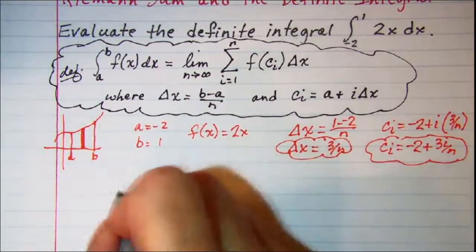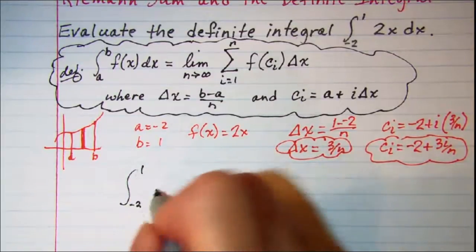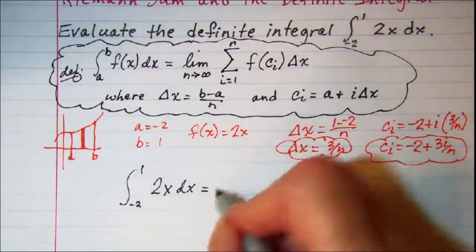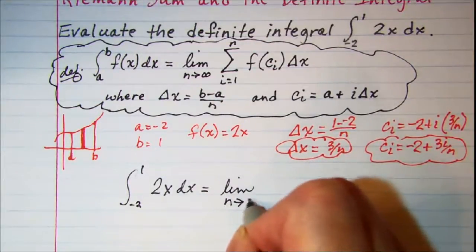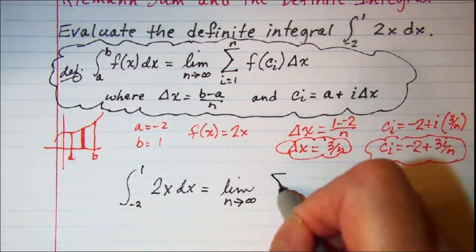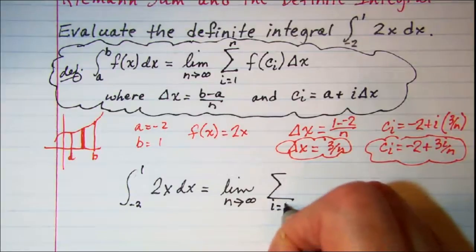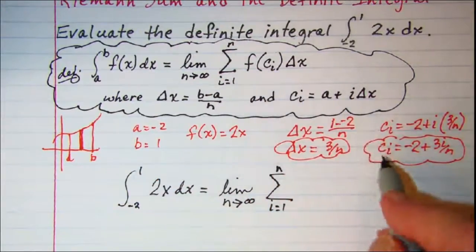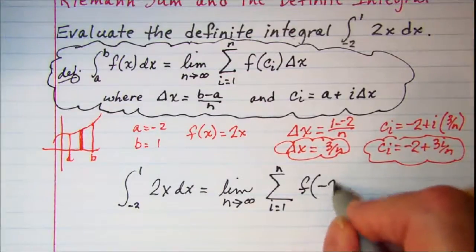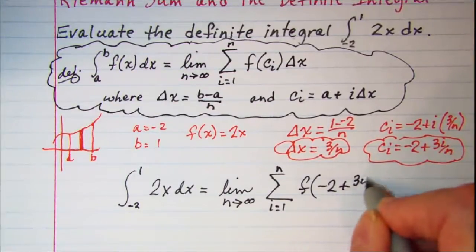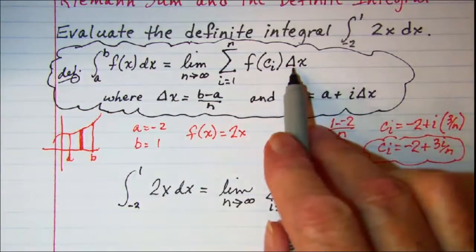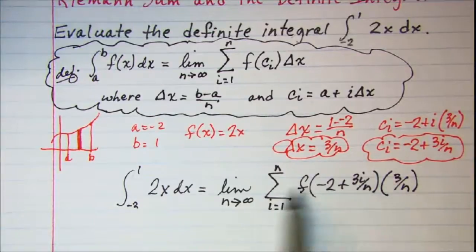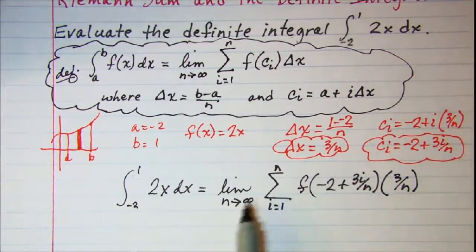So our definite integral from negative 2 to 1 of the function 2x dx is equal to the limit as n approaches infinity of the summation as i goes from 1 to n of f of c sub i — that is f of negative 2 plus 3i over n — multiplied by delta x, which is 3 over n. This is our Riemann sum.